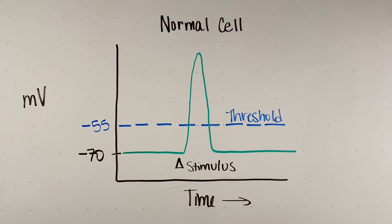The signs and symptoms of hyperkalemia result from the fact that potassium plays a huge role in action potentials and muscle function. In a normal cell, the resting membrane potential in muscle cells is around negative 70 millivolts. In order for an action potential to occur, a stimulus has to cause the cell to depolarize enough to meet threshold, and once threshold has been met, an action potential occurs — and action potentials in muscle cells equal muscle contraction.